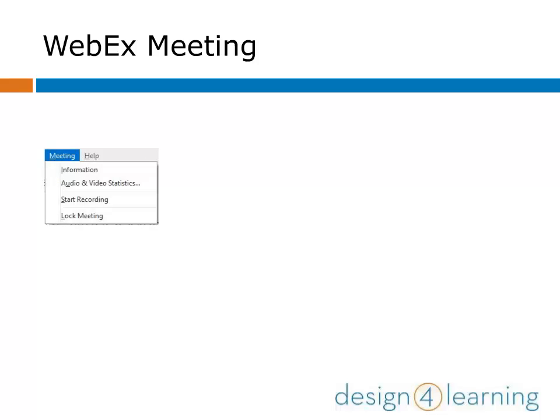From the main menu, check out the Meeting drop-down menu. Here is another way to access key meeting info like call-in numbers, audio and video stats, and record your meeting — all of which are accessible in other places. WebEx is good about putting key information and tools in multiple places, so you never have to search very hard for them. You can also lock a meeting, which prevents anyone new from joining, as an added layer of security for private meetings.